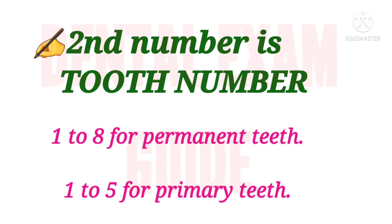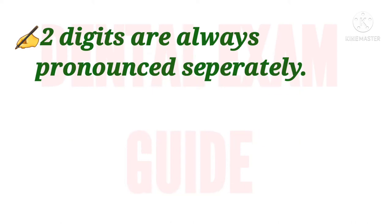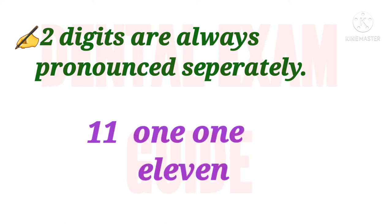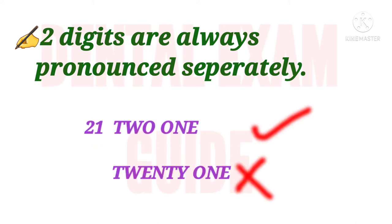This combination removes the computer-unfriendly grid symbol of the Palmer system. The two digits are always pronounced separately. For example, the number '11' is pronounced as 'one one,' not 'eleven,' and '21' is pronounced as 'two one,' not 'twenty-one.'